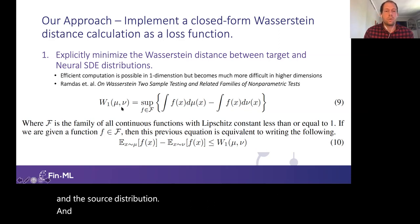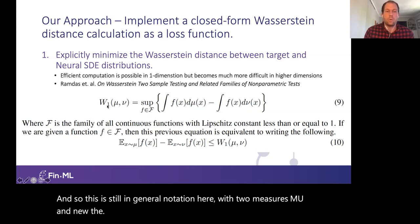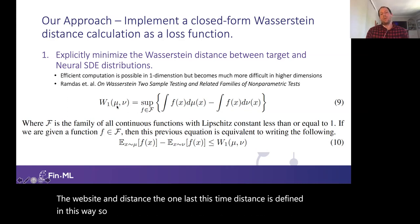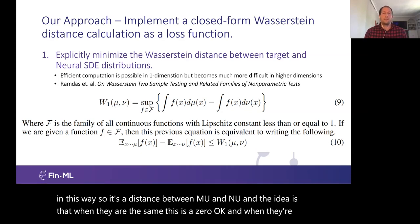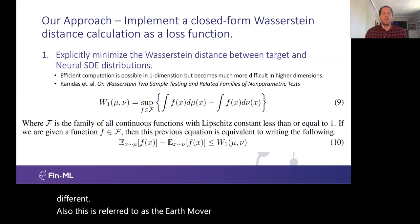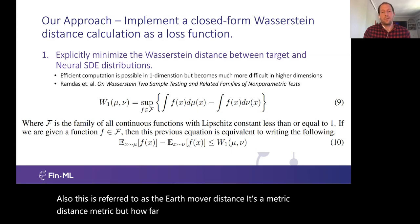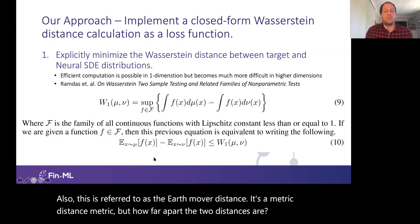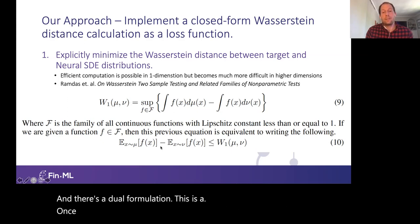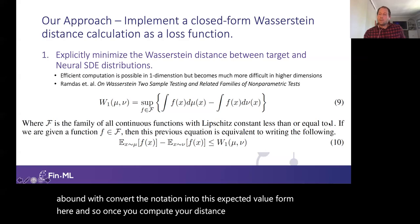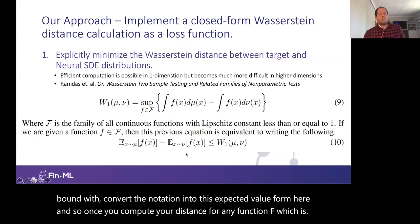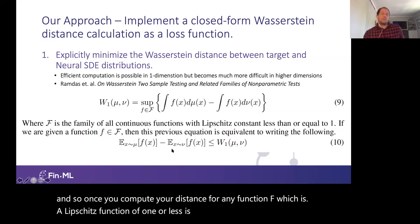The 1-Wasserstein distance between measures mu and nu is defined such that when they are the same the distance is zero — it is also called the Earth Mover Distance, a metric about how far apart the two distributions are. There is a dual formulation: once we compute the Wasserstein distance, for any function f which is a Lipschitz-1 function, its expected value difference is bounded by the Wasserstein distance. This is an idea we're going to use for options pricing.